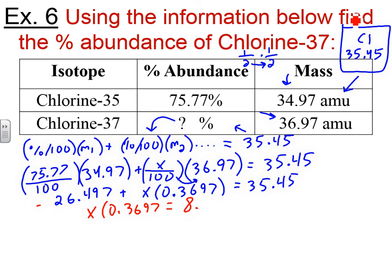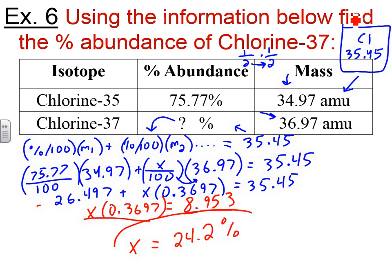Now to solve for x, we divide 8.953 by 0.3697, and x equals 24.2%. We've found the percent abundance of the second isotope with a little algebra. You might note you could have gotten that more easily by subtracting from 100 — since 100 minus 76 is roughly 24 — and you'd be correct. But doing it the full algebraic way shows how to go backwards through the formula.